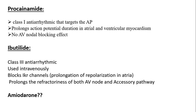Amiodarone has AV nodal blocking property and it's not recommended because it can cause degeneration into ventricular fibrillation. Procainamide and ibutilide — ibutilide is not available in Pakistan as far as I know, so amiodarone is the most commonly available drug. But amiodarone has both properties of blocking the pathway and also affects the node, so there's a chance the patient might degenerate into VF. So the best drugs are ibutilide and procainamide.